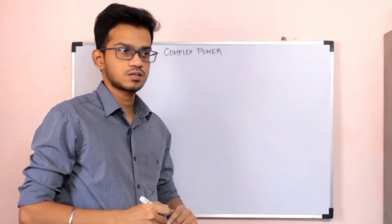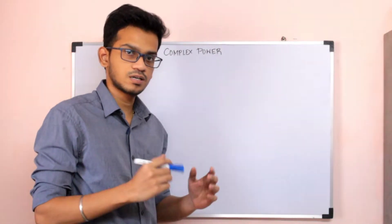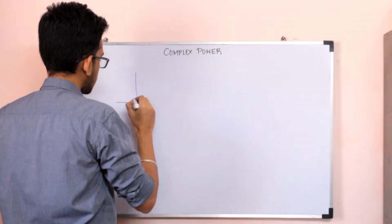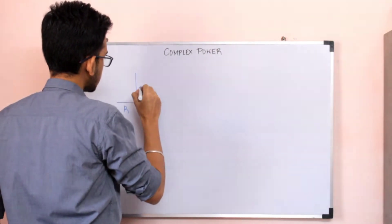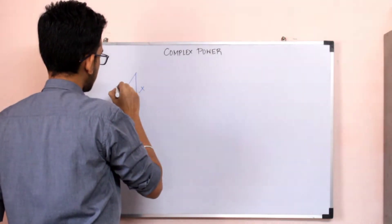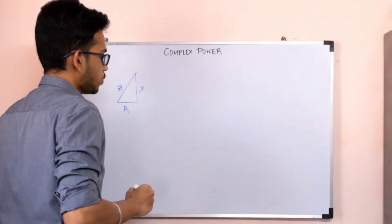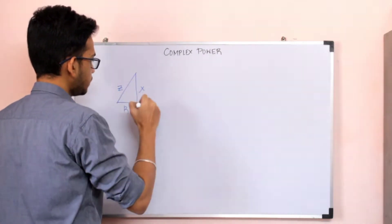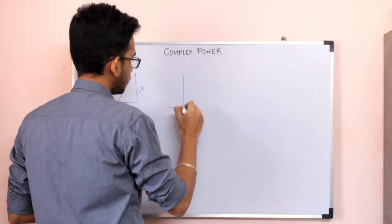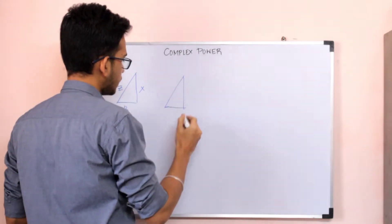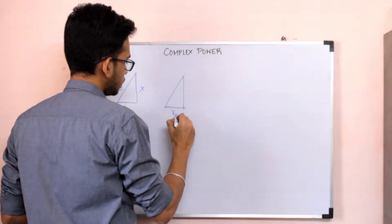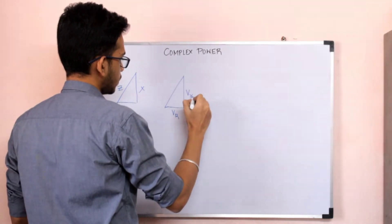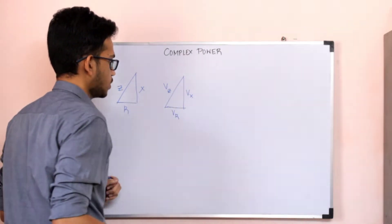Let's start with this complex power. There is a resistance and a reactance. Let's go to the two factors — let's go to the impedance. This is the impedance triangle. Multiply by i, let's multiply the current. This is the resistance and the reactance; the impedance is the voltage. Total impedance is the voltage.